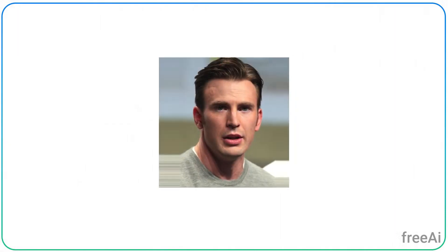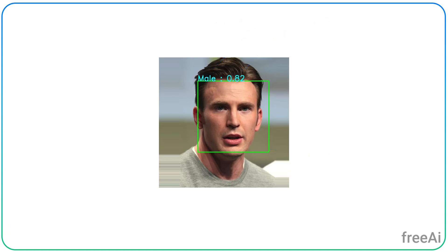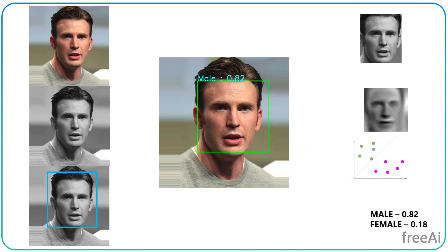First of all, let's say we have an image like this. For general classification, the expected output is something like this, which has a bounding box. On top of that, we have the description of the class and the confidence score. But in order to achieve this in the backend, there are several steps to make this happen.